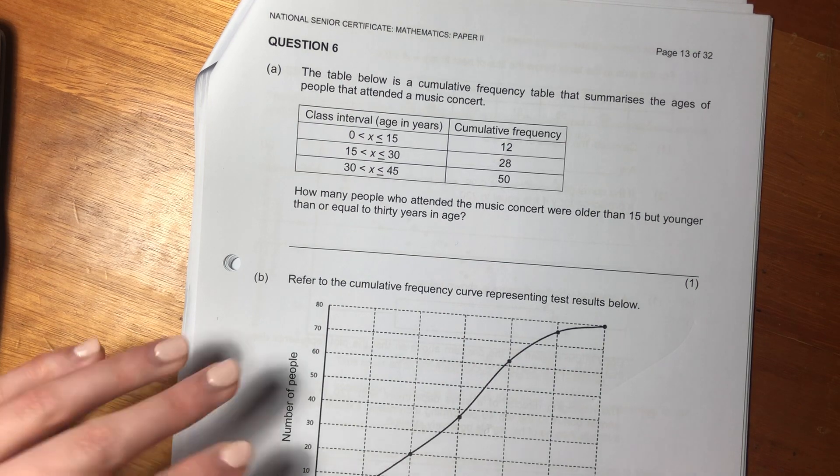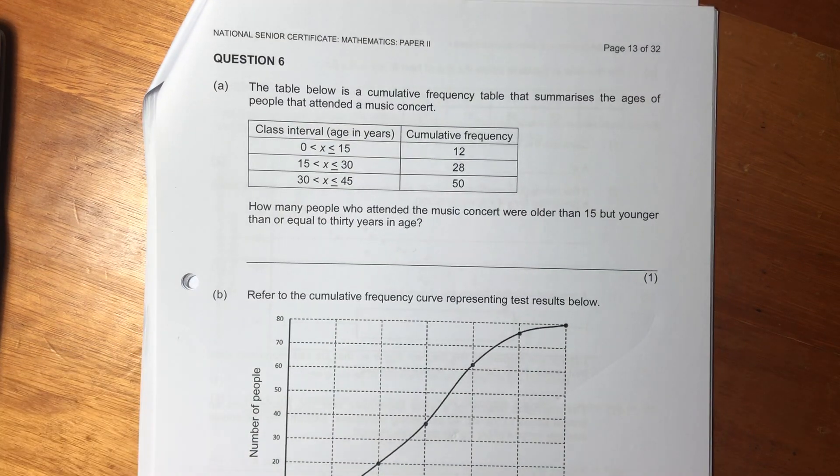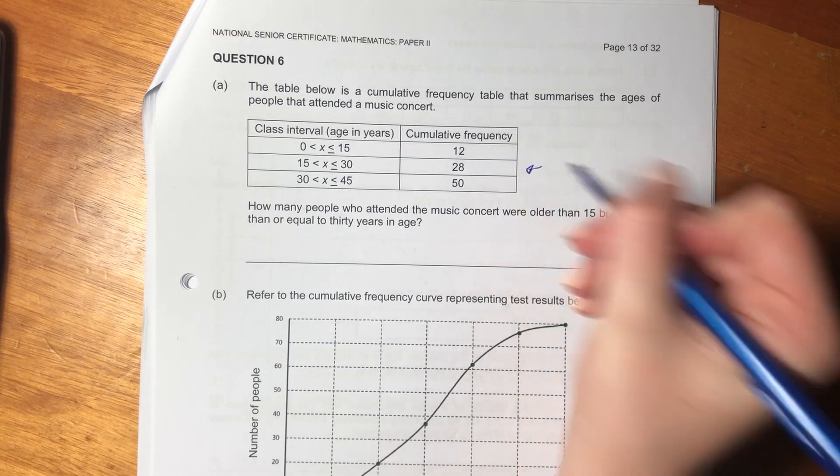Cumulative frequency - that is such an important word. How many people who attended the music concert were older than 15 but younger than or equal to 30 years old? So it's basically saying how many people were there in this category?